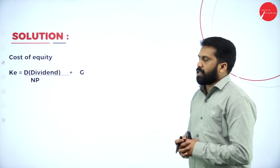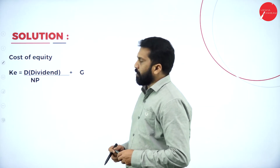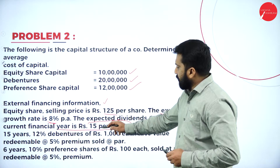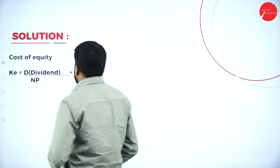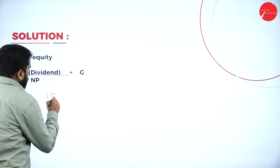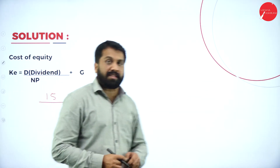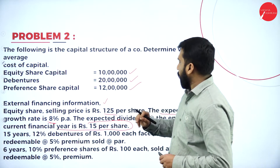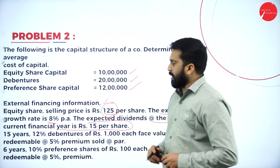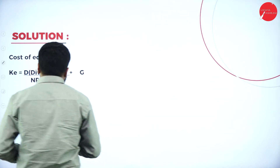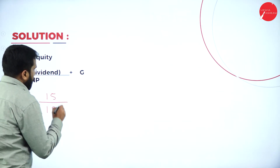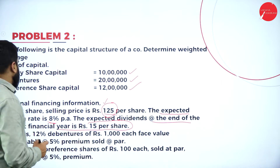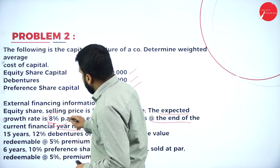These are the formulas to calculate the cost of equity shares. First, we need the dividend. As per this problem, the dividend is 15 per share. So it will be 15 divided by the net proceeds. The net proceeds are 125. Then we add the growth rate. The expected dividend at the end of the current financial year is 15%, and the growth rate mentioned is 8%.